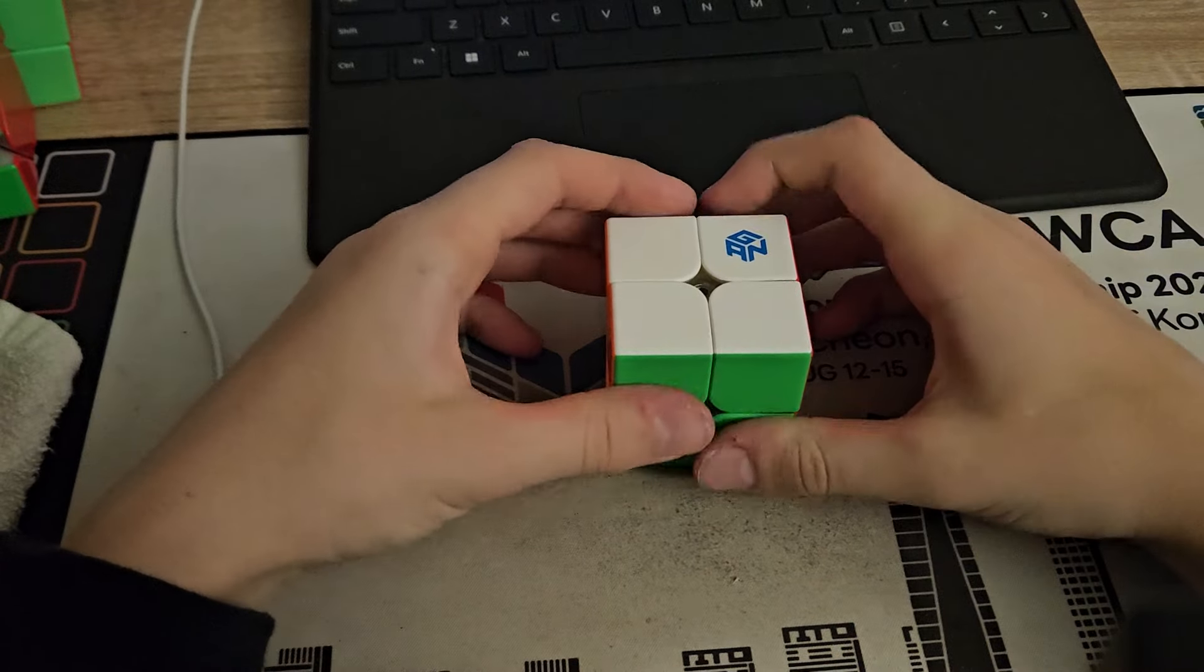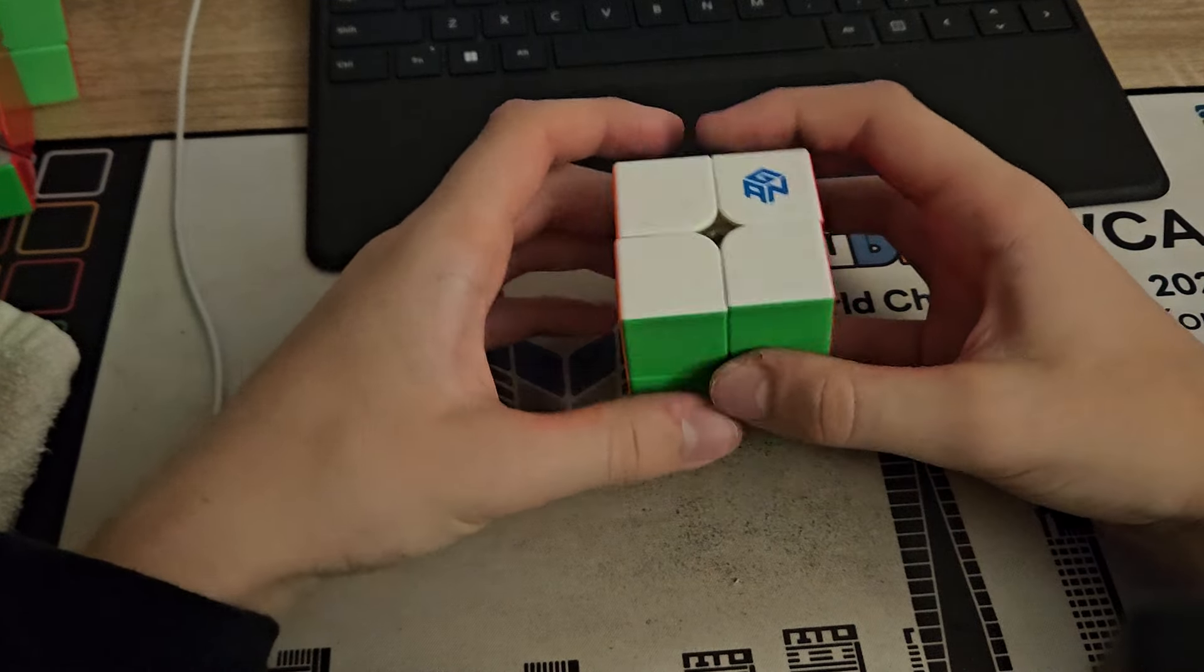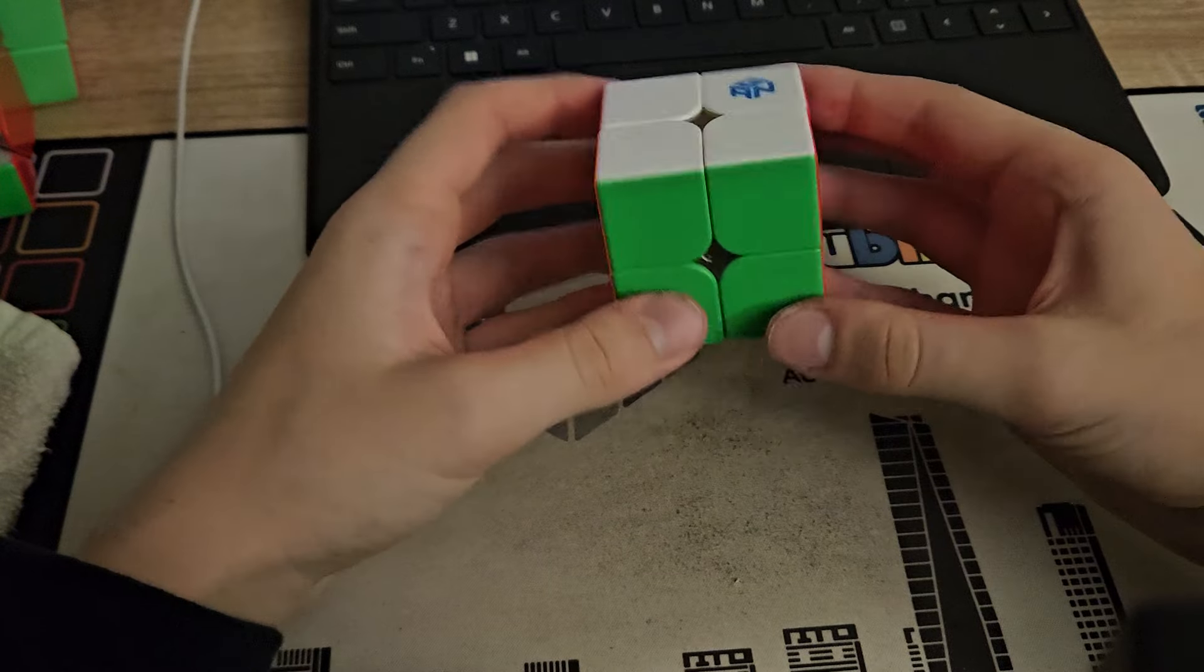Okay, I'm unfortunately somewhat good at 2x2, so I just got a 1.03 PB average of 5, which I will now reconstruct.